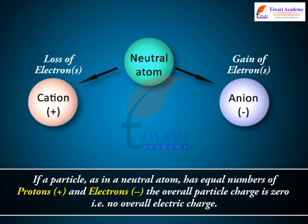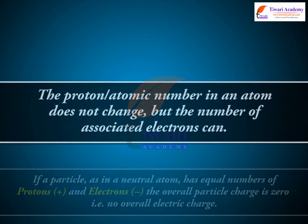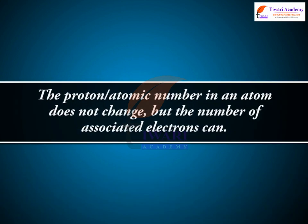If a particle, as in a neutral atom, has equal numbers of protons (plus) and electrons (minus), the overall particle charge is zero — that is, no overall electric charge. The proton atomic number in an atom does not change, but the number of associated electrons can.